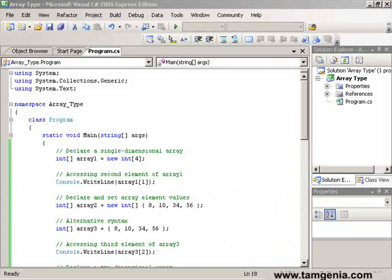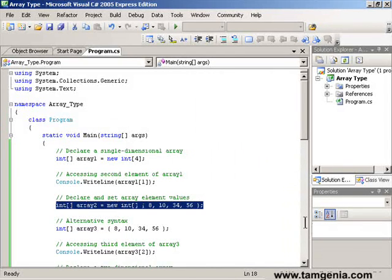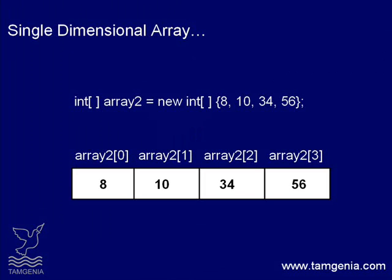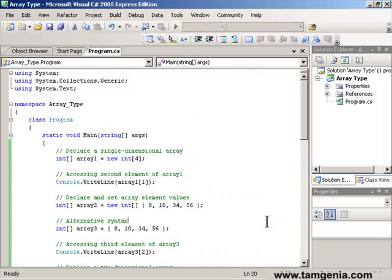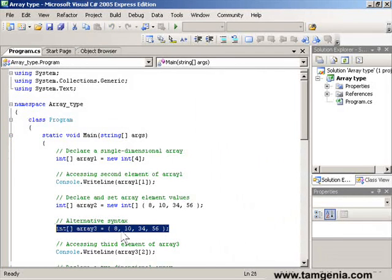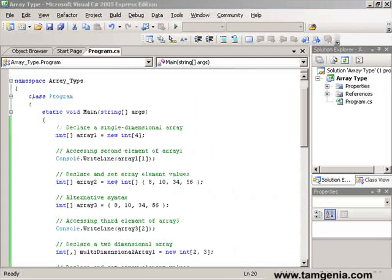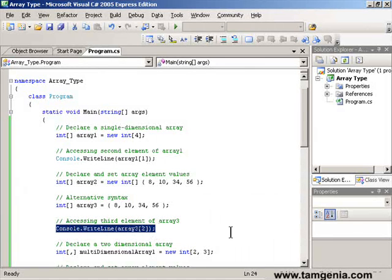At the time of declaration we can also store different values in array elements. So in this case all of our array containers got some value which we specified at the time of declaration one after one. We can also do initialization and declaration through another shorter way you are viewing here. So the Console.WriteLine now will print the value of the third element of array[3], that is 34, on the console.